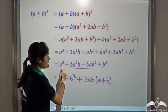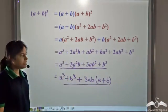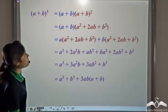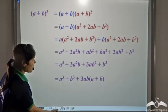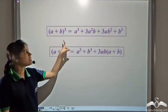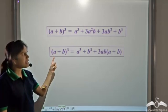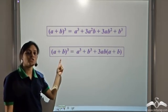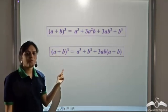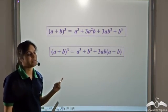Both forms are very important and this is a special identity. Whenever we need to find the cube of an expression containing two terms, we can directly apply this identity. We can apply whichever form is applicable depending on the case, so we need to memorize it.